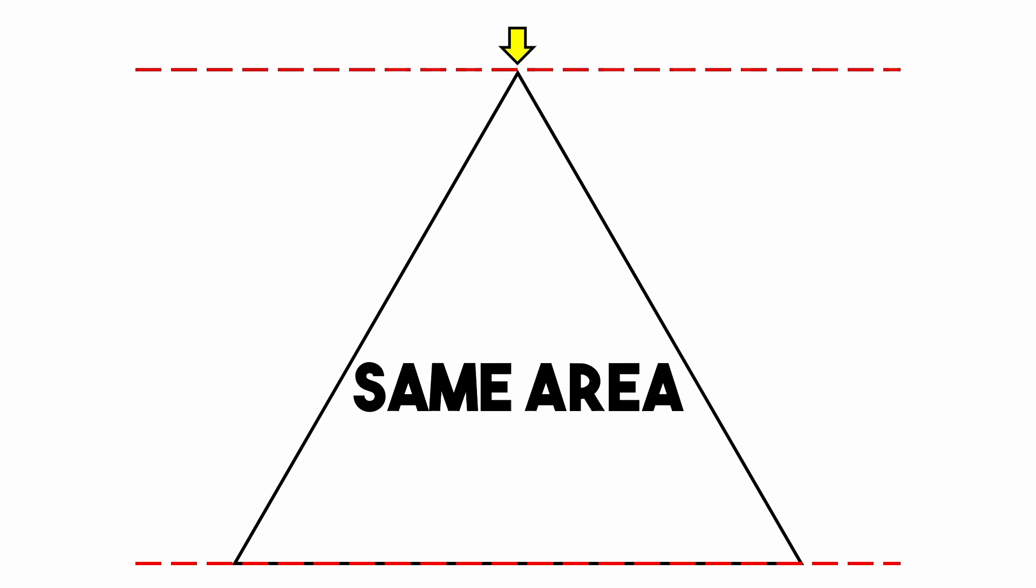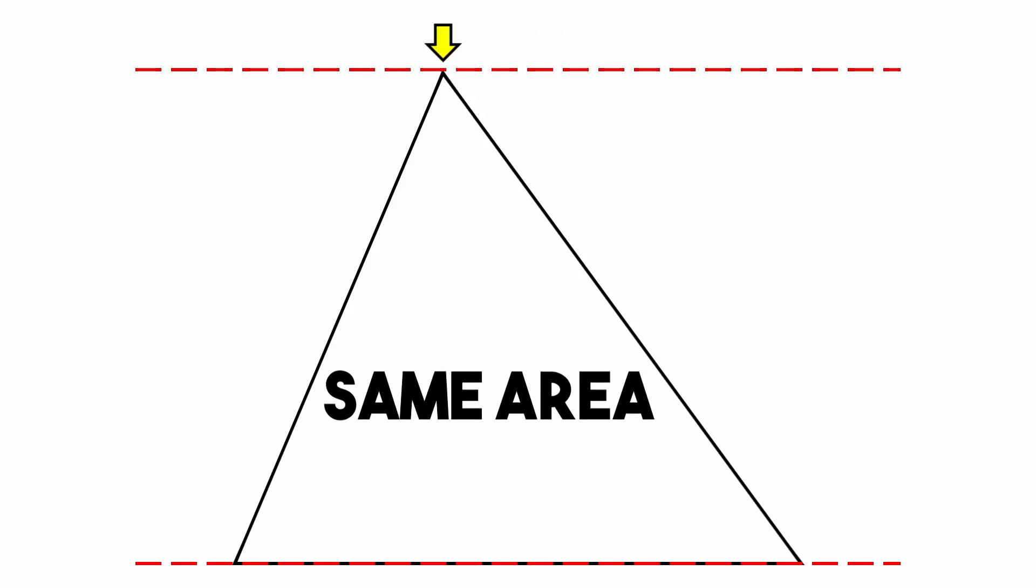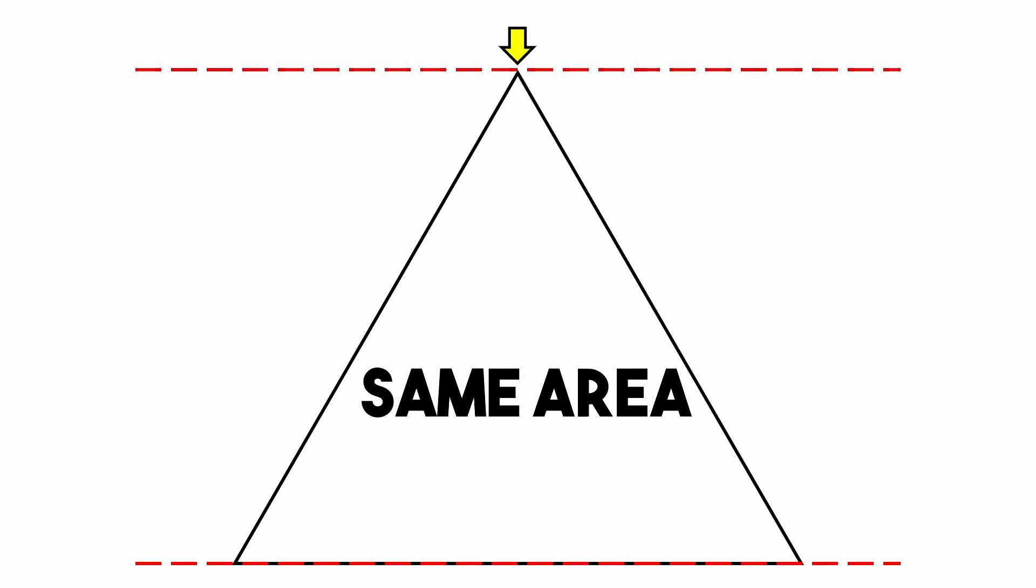What this means is that, as long as these three lines don't change, our triangle can take many different forms and have the same area. And this can be directly applied to our problem.